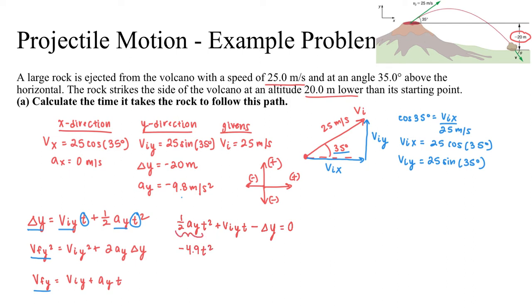This will be plus 25 sine 35 degrees minus a negative 20 meters. Be careful. The minus sign is not part of the delta y. In this case, my delta y is negative. So it's minus a negative. That will give me negative 4.9 t squared plus 25 sine 35 degrees t plus 20 equals zero.